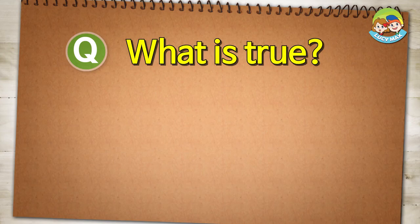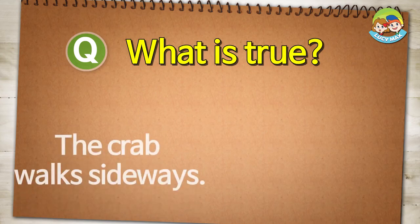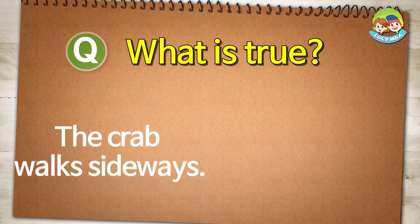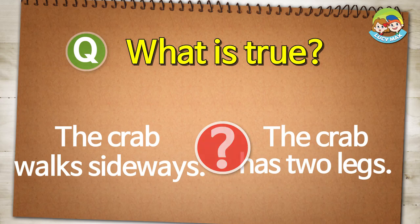What is true? The crab walks sideways. The crab has two legs.